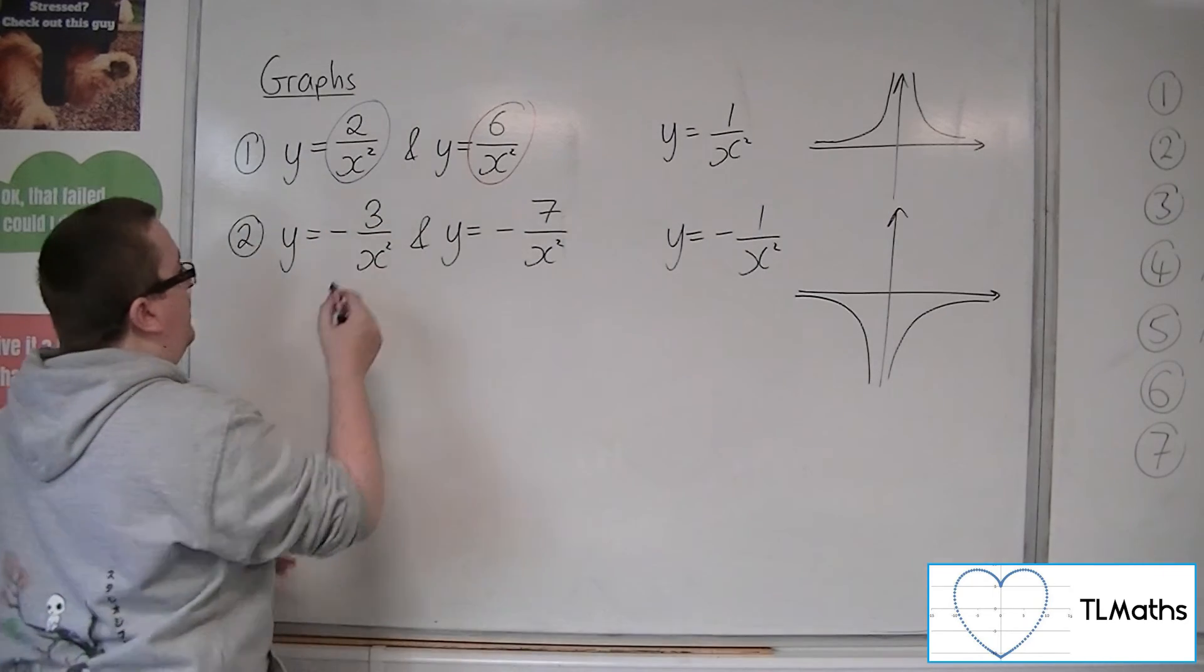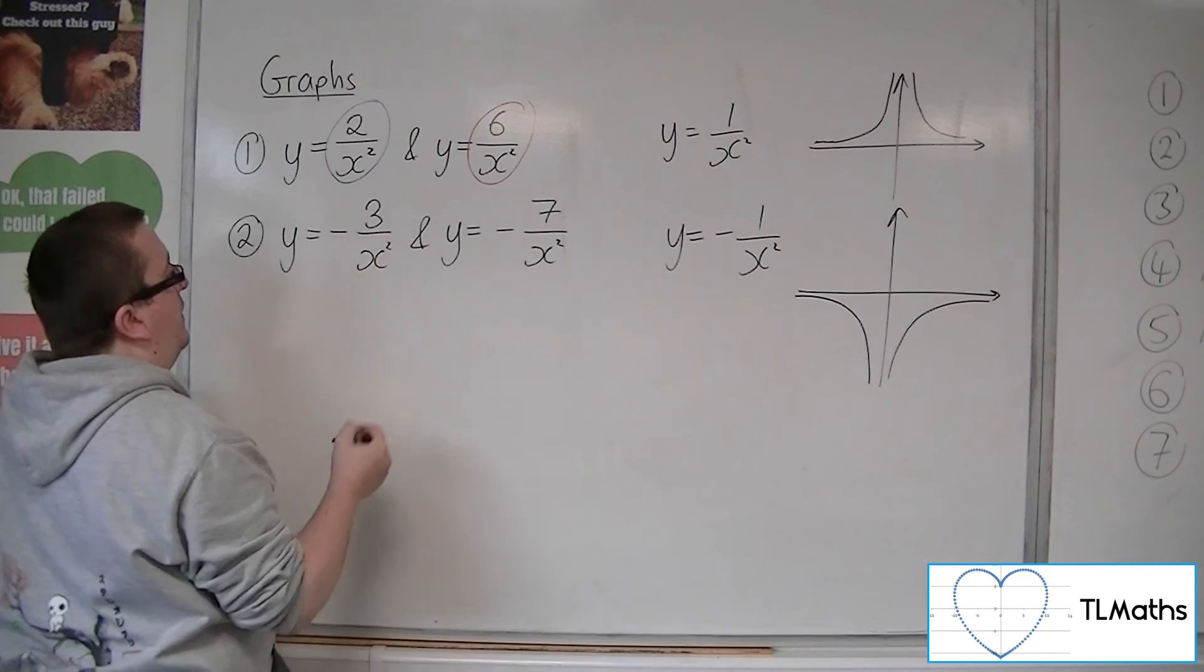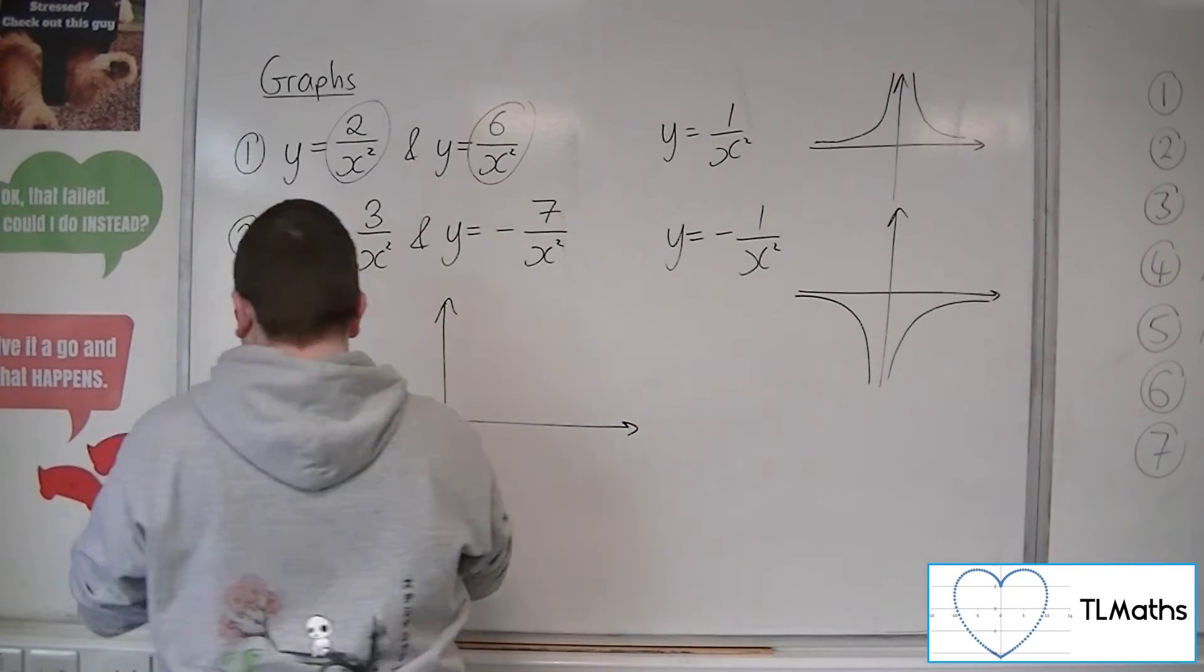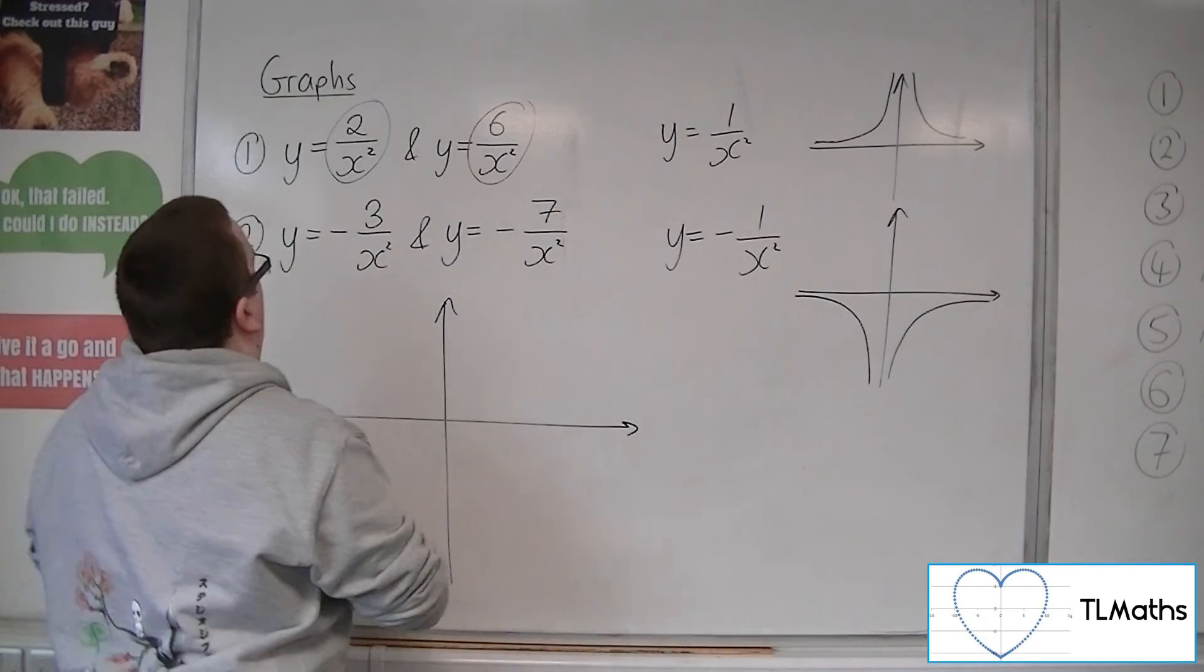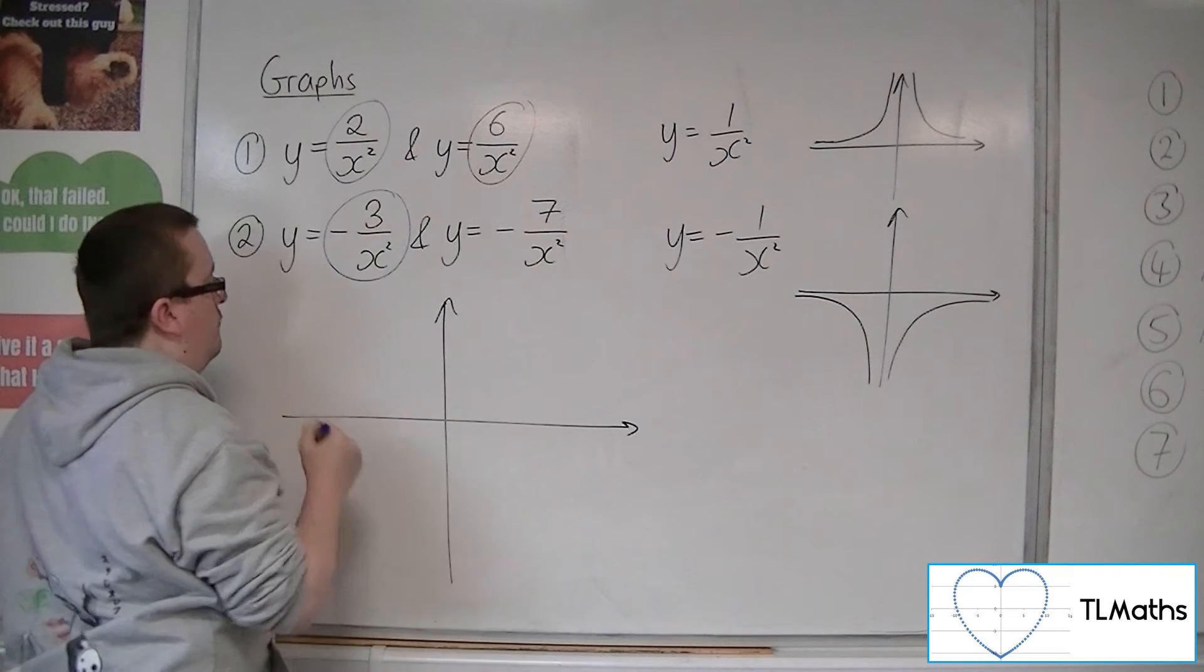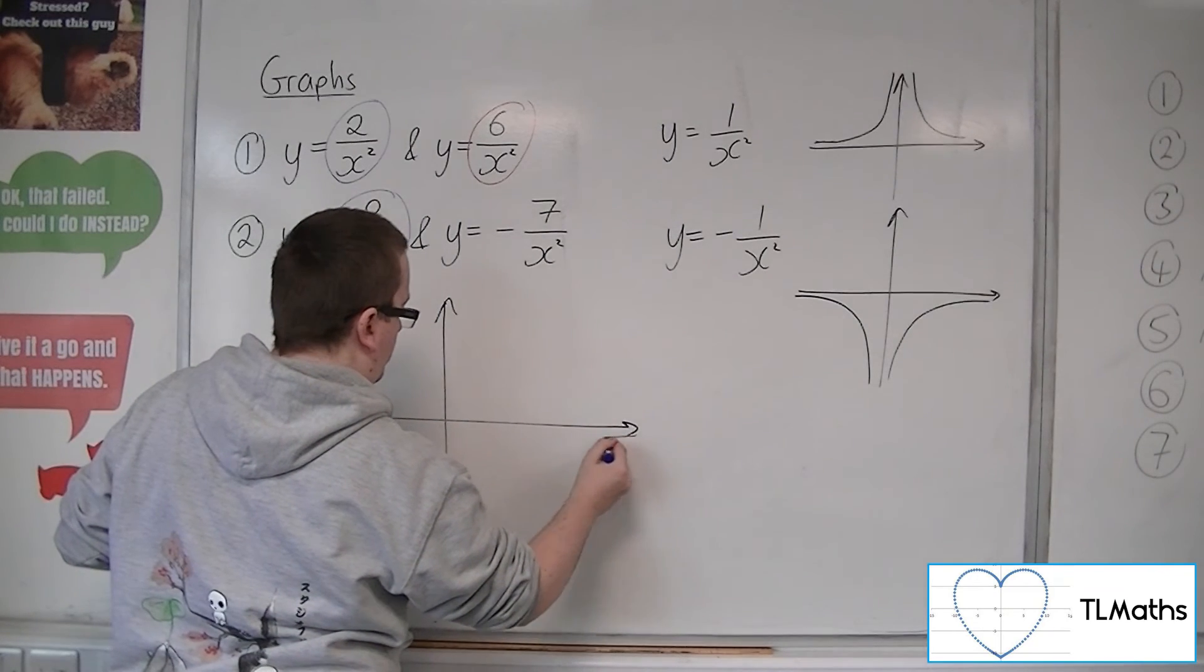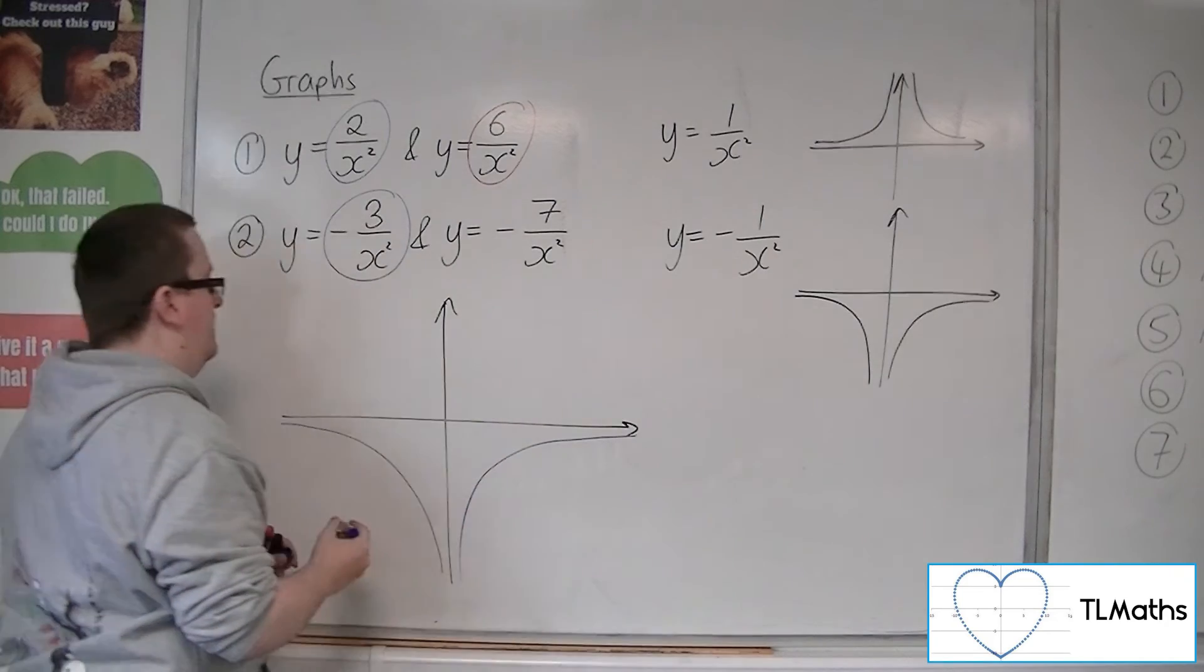So if I'm going to sketch both of these graphs, then y equals minus 3 over x squared will look something like that.